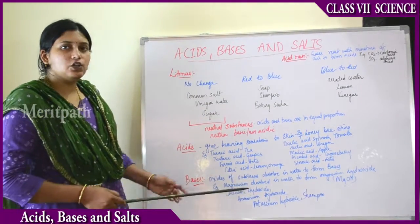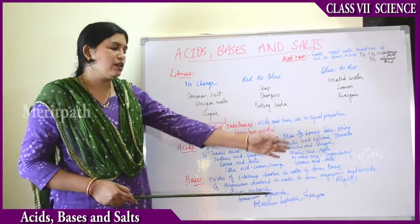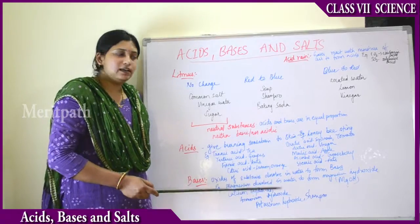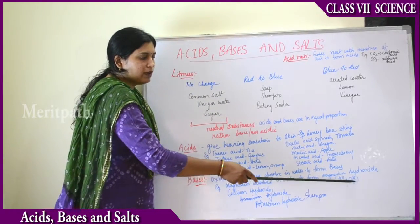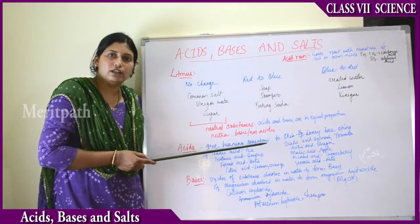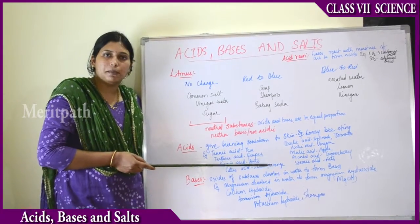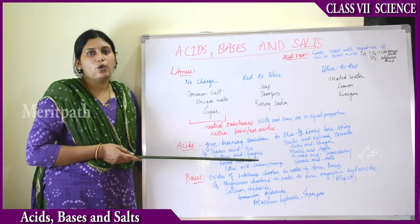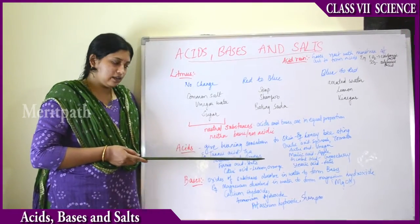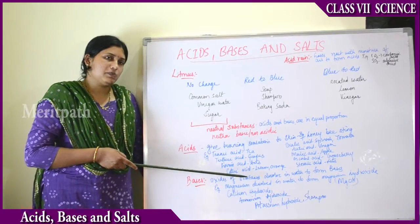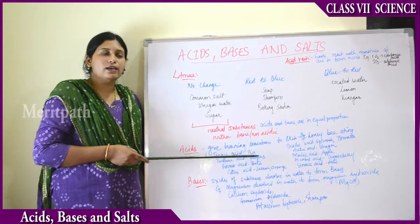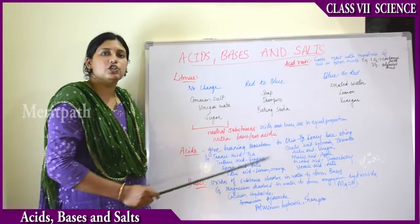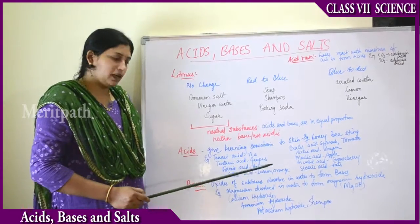For example, magnesium dissolved in water gives rise to magnesium hydroxide (MgOH). All bases are indicated by OH in their chemical formula — if any compound has OH in it, it is a base. So oxides of substances dissolved in water give rise to bases.